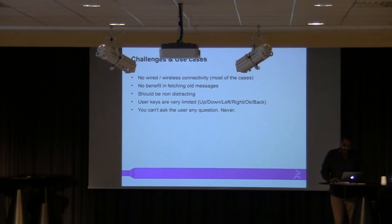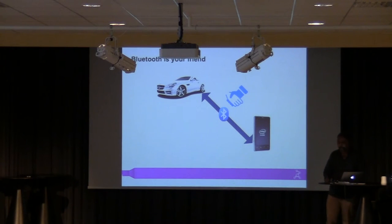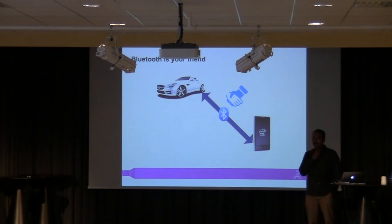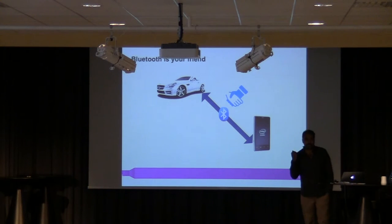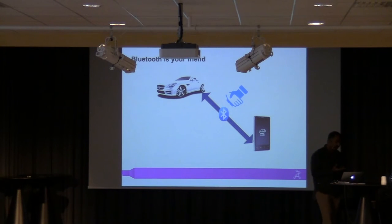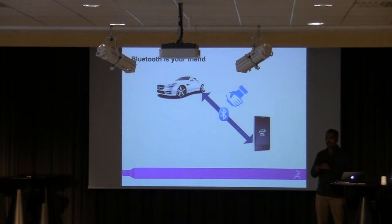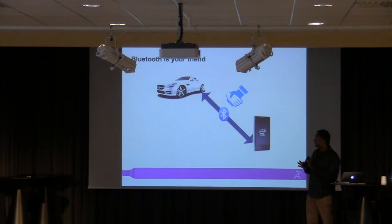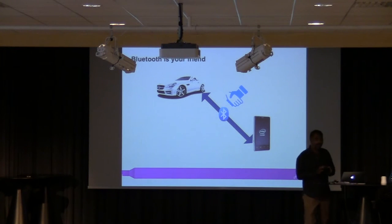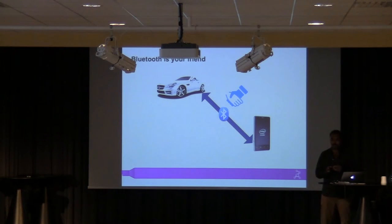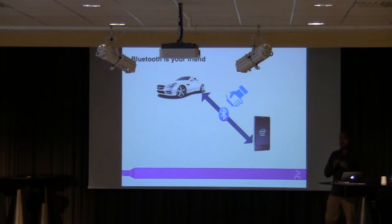These are the challenges and typical use cases. If you don't have wireless, how are you going to read mails? Bluetooth is your friend. The typical case is: I carry my mobile into the car. The car has a Bluetooth IVI engine, which in 95% of cases has Bluetooth. It will connect to my phone through Bluetooth, and that becomes your connectivity to access mails. It will show you mails directly from your phone.